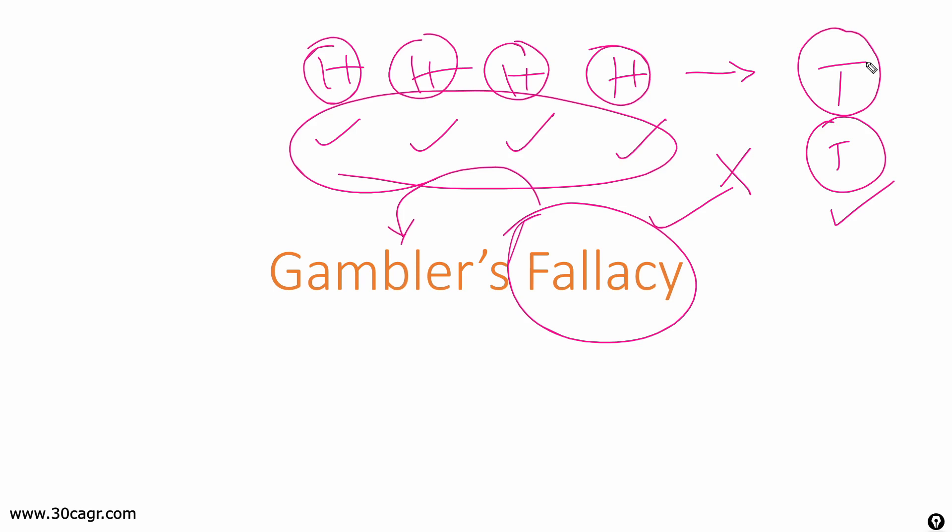To put it very simple, even we inherently and intuitively think that if heads, heads, heads, and heads are the outputs of four events, then the next one would be tails, right? This is very obvious. Most of us think this way.